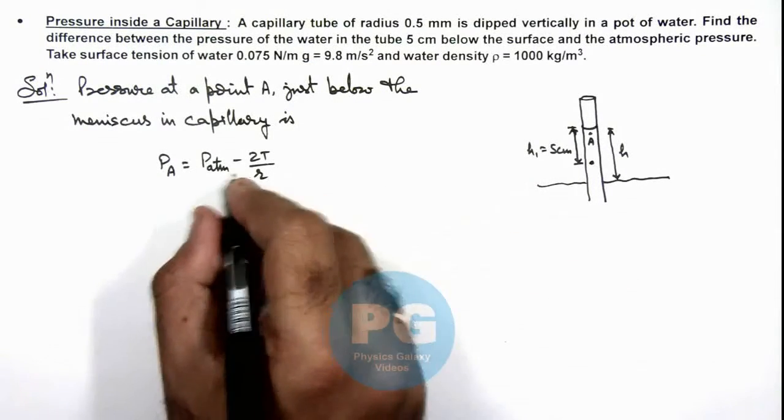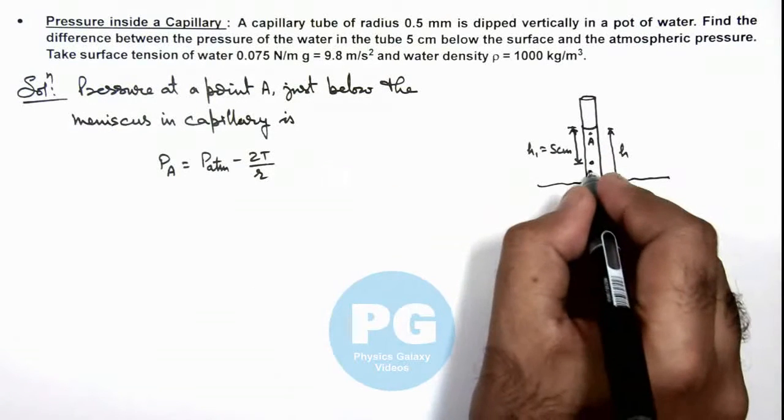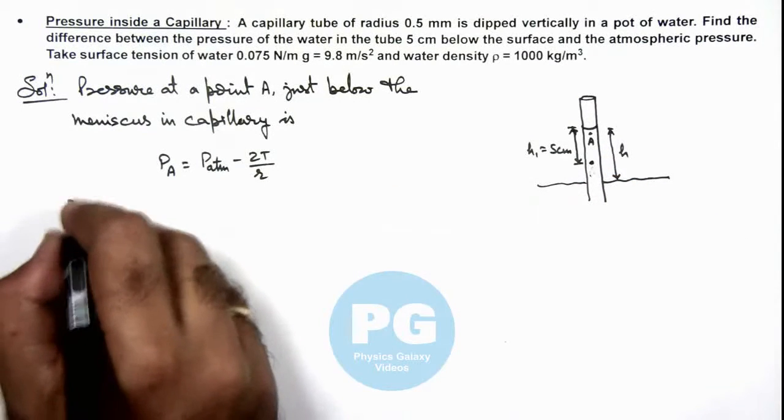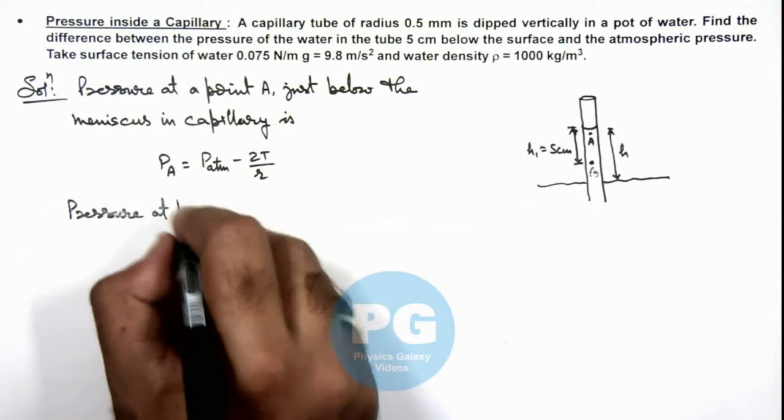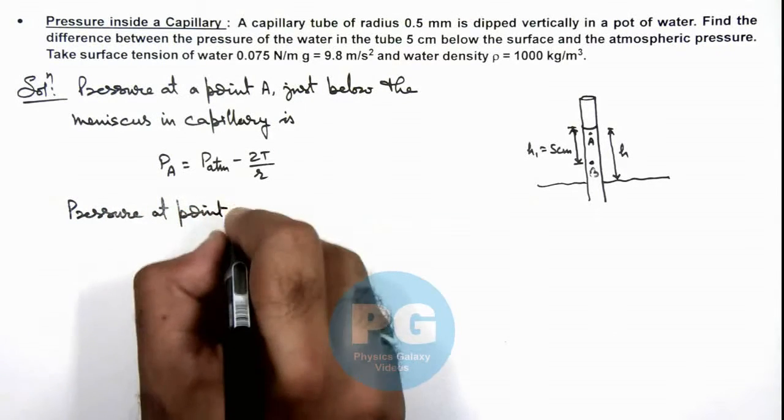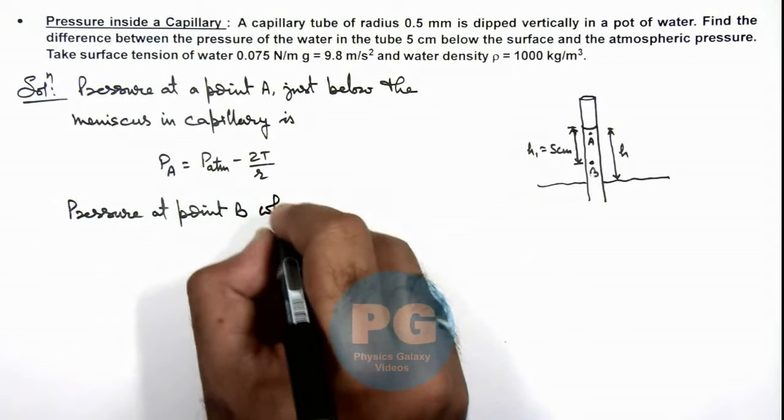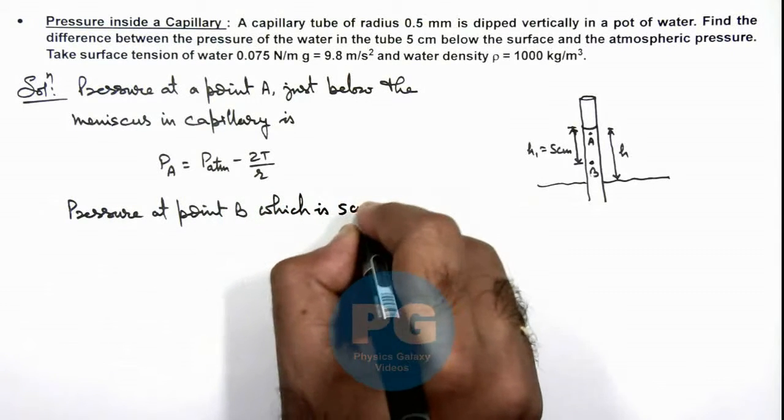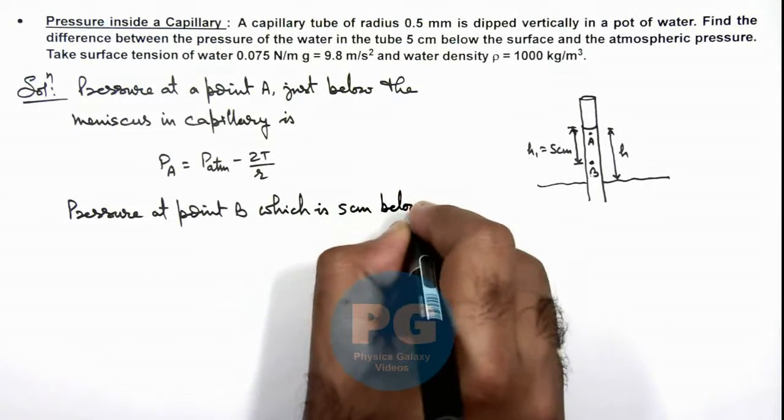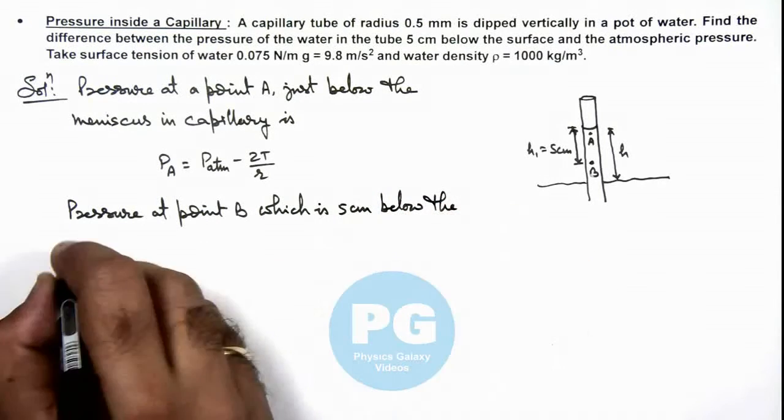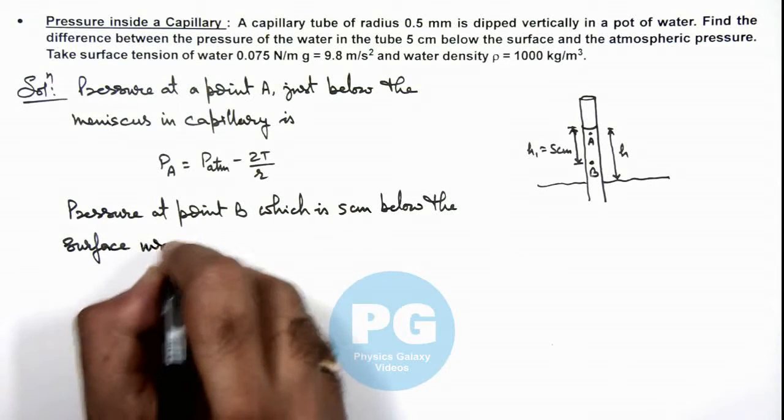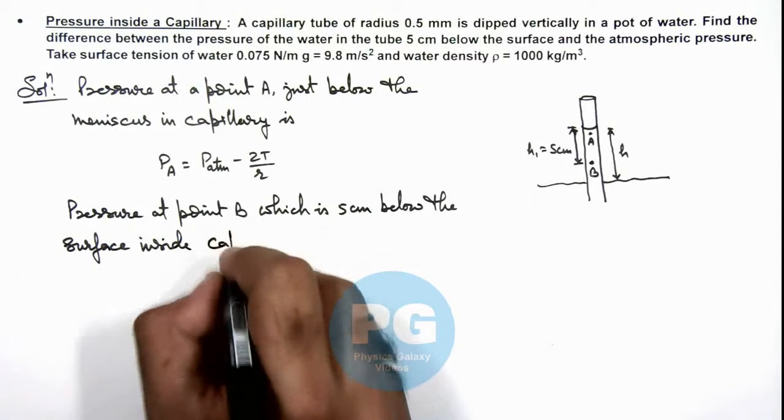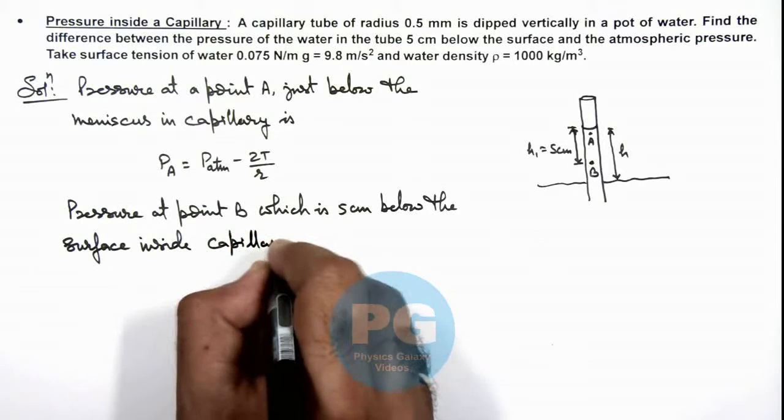Now in this situation, if this is P_A, then if this point is B, we can write pressure at point B, which is 5 centimeters below the surface inside capillary.